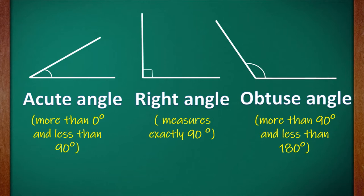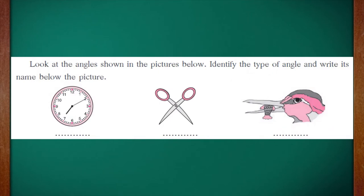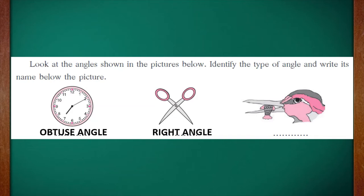Let's answer a few questions with context to this. Look at the angles shown in the picture below. Identify the types of angle and write its name below the picture. The first angle we see is 10 minutes past 7, so this angle is obtuse angle. Similarly, if we observe the scissor, it is a right angle. And the third angle is an acute angle.